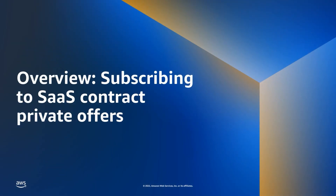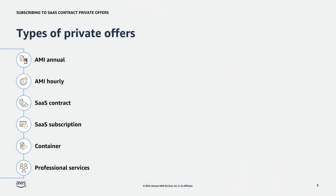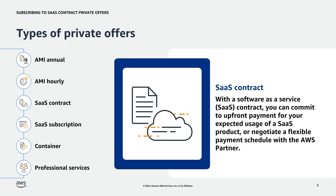Let's start with an overview of SaaS Contract Private Offers. Before we dive in, let's review the types of products supported by private offers. There are six types of private offers available for customers to subscribe to: AMI Annual Private Offers, AMI Hourly Private Offers, SaaS Contract Private Offers, SaaS Subscription Private Offers, Container Private Offers, and Professional Services Private Offers. Today, we will be discussing SaaS Contract Private Offers.